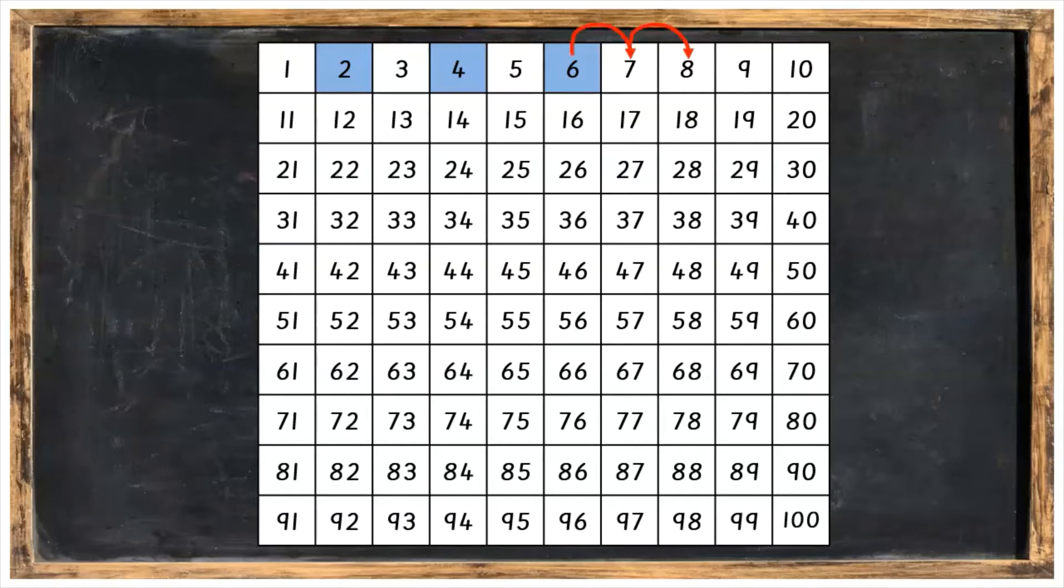Counting on two more, hop one, hop two, which is eight. And then counting on two more, hop one, hop two, which is ten.